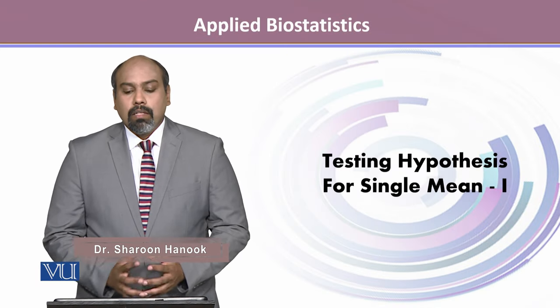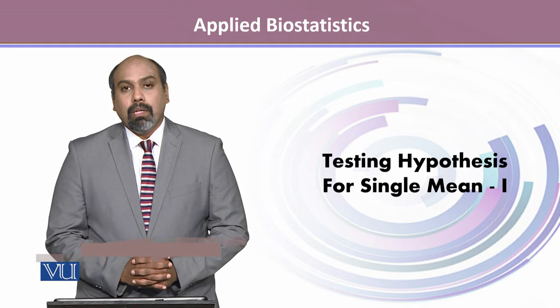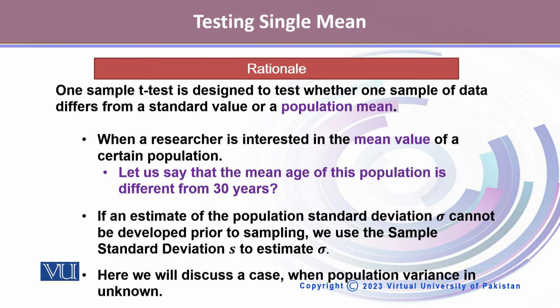This module talks about testing of hypothesis for a single mean. The one-sample t-test is designed to test whether one sample of data differs from a standard value or a population mean. When a researcher is interested in the mean value of a certain population — for example, whether the mean age differs from 30 years — and the population standard deviation sigma cannot be estimated prior to sampling, we use the sample standard deviation s to estimate sigma. This is the case where population variance is unknown.